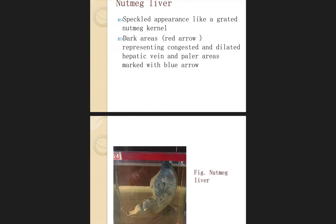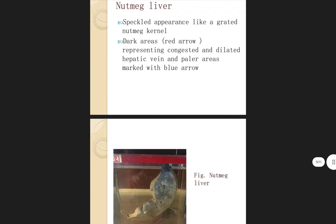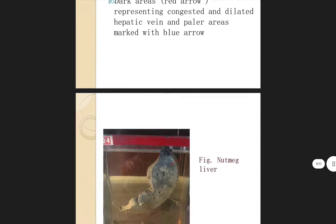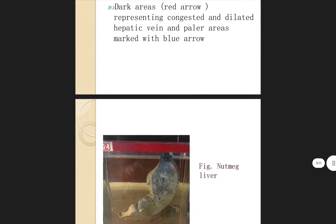Let's learn the gross pathology of nutmeg liver. Nutmeg liver has a speckled appearance, like a grated nutmeg kernel. The dark areas, marked with a red arrow, represent congested and dilated hepatic veins, while the paler areas are marked with a blue arrow.